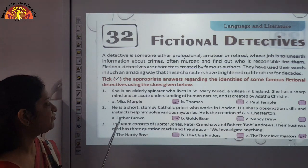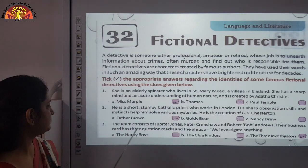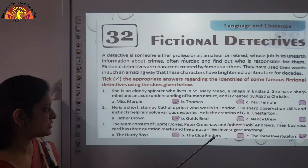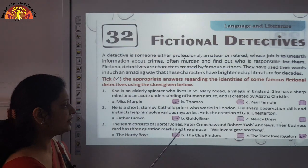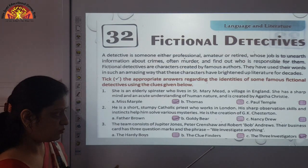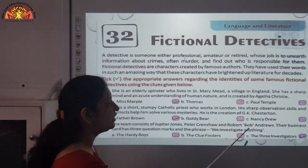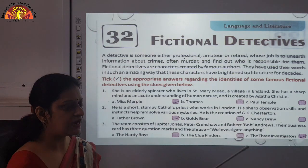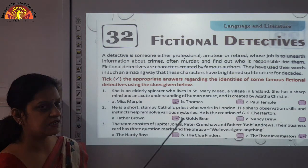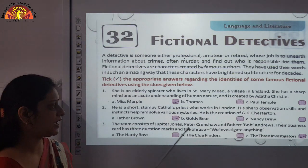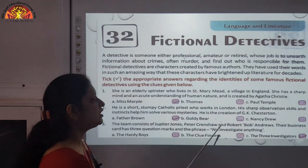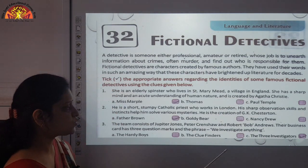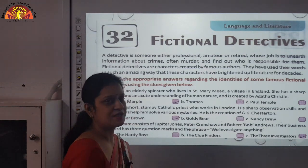Number three: this is a team consisting of Jupiter Jones, Peter Crenshaw, and Robert Andrews — also known as Bob. Their business card has a phrase written with three question marks. That phrase is 'We Investigate Anything.' And the answer is quite obvious — The Three Investigators.